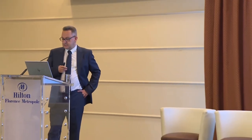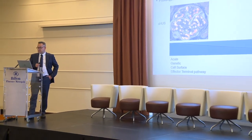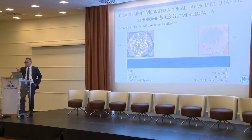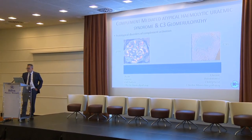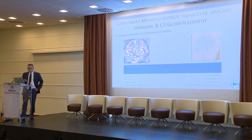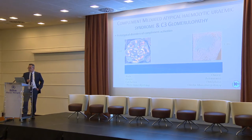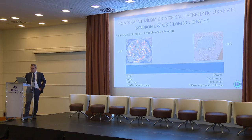Atypical HUS, or complement-mediated HUS, is acute — mostly. Genetic — mostly. Cell surface complement activation — mostly. And the effector molecule is the terminal pathway. C3G is mostly chronic, mostly autoimmune, mostly fluid phase, and the effector molecules are in the alternative pathway with some spillover.